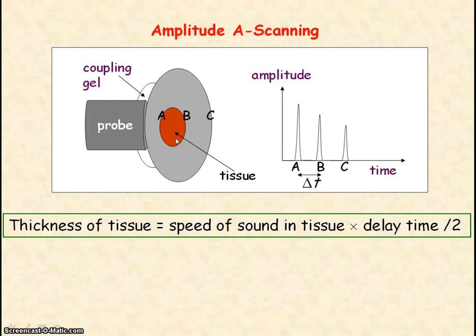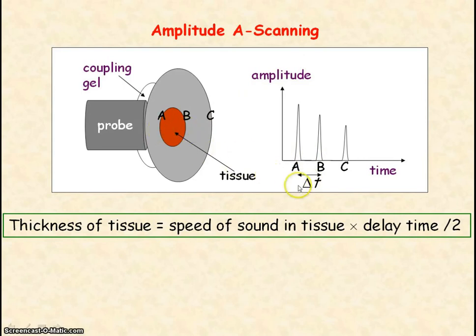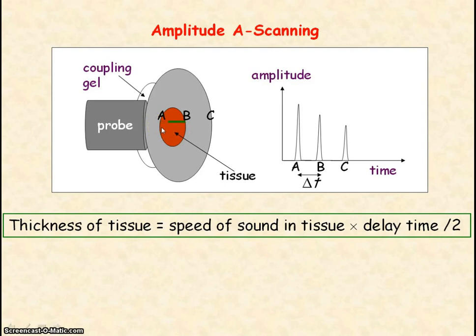We can also determine the thickness of a tissue from the delay time the probe receives the ultrasound reflected from the front and rear boundaries of the tissue. Delta T represents this delay time between boundaries A and B. During the delay time delta T, the ultrasound travels a distance of twice the thickness of the tissue, as it travels there and back from A to B and back to A. Since distance equals speed times time taken, the thickness of the tissue equals the speed of sound in the tissue multiplied by half the delay time.